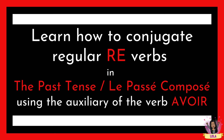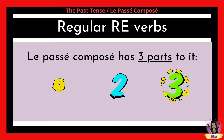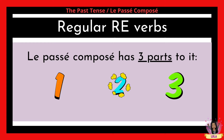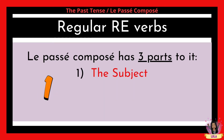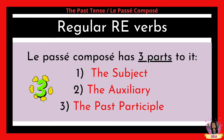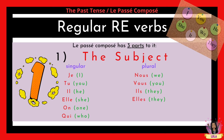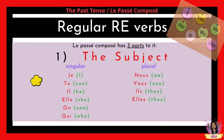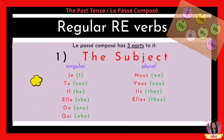The passé composé has three parts to it, so let's take a look at each one. The first one is the subject, the second part is the auxiliary, and the third part is the past participle. When we talk about the subject, we're talking about the words in red: je, tu, il, elle, on, qui, nous, vous, ils, and elles.